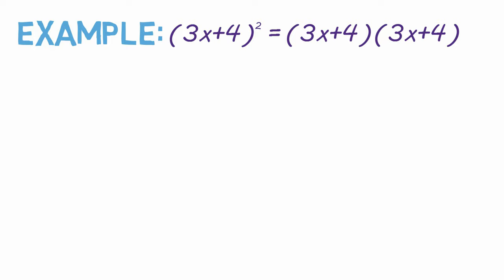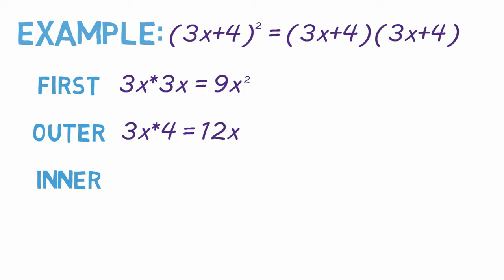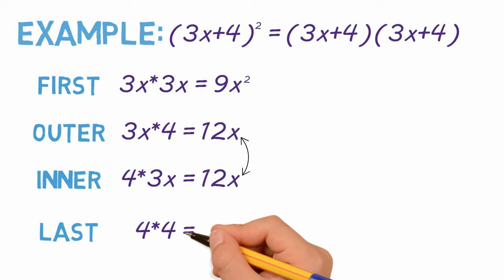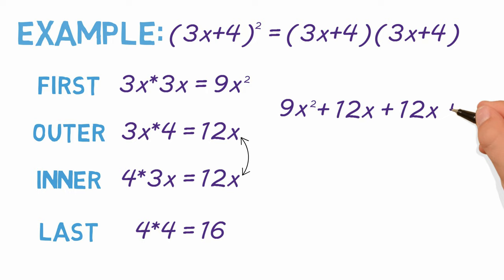First. Outer. Inner. And notice the outer and inner products are the same when you're solving for a square. And last. This gives you 9x squared plus 12x plus 12x plus 16.